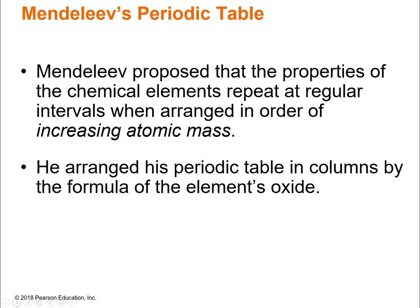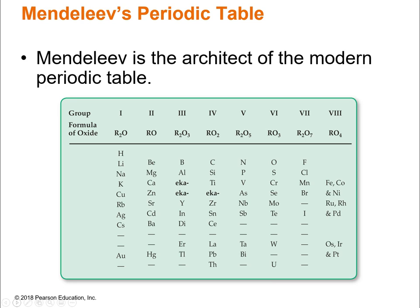Mendeleev, however, said that's great, but here's a different idea. Let's arrange elements in order of increasing atomic mass and organize them by the formula of the element's oxide. That was really the key difference between Mendeleev's periodic table and all the others — the formula of the element's oxide. When you form an oxide, you have a metal with oxygen, and the number of metal atoms in the compound differs depending on the specific chemical properties of that metal.